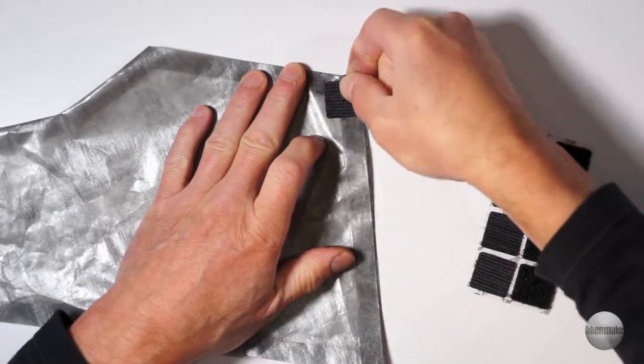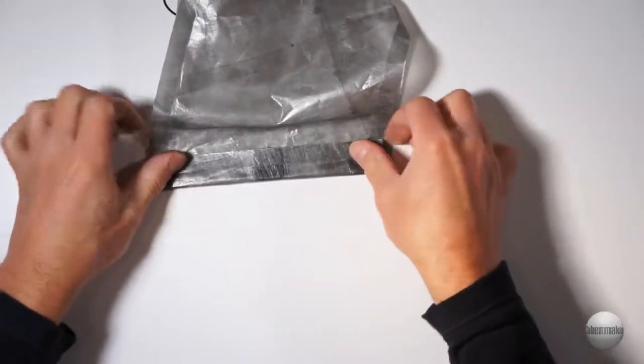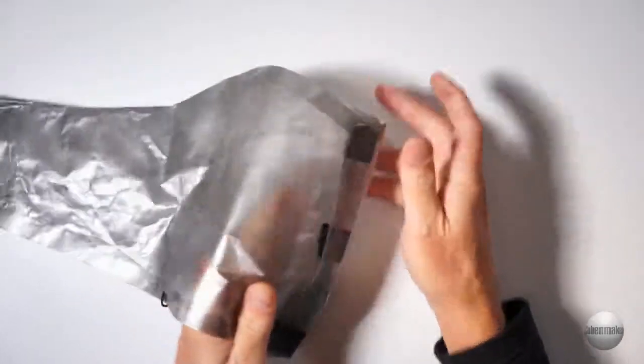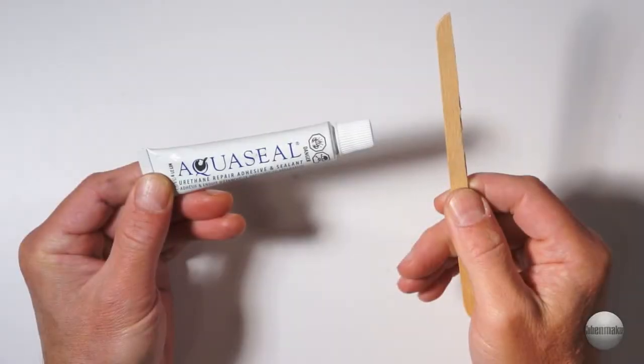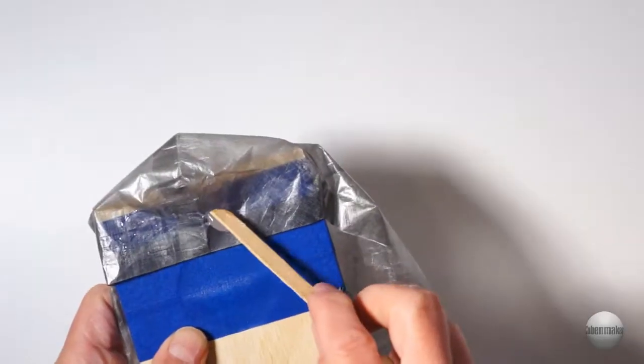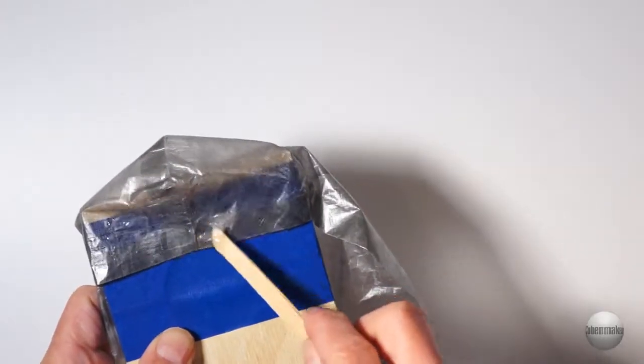Self adhesive Velcro squares finish the rear closure. AquaSeal is great stuff. I'm adding a thick layer to the toes for scuff resistance.